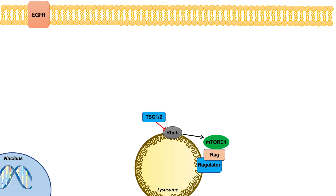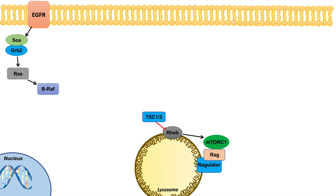How does this tie in with the RAS-RAF-MEK-ERK pathway? The RAS-RAF-MEK-ERK pathway is activated when a receptor in the cell membrane known as EGFR is activated by a number of different ligands. When this receptor is activated, it leads to activation of SOS and GRB2, which then activate RAS. When RAS becomes activated, it leads to activation of BRAF, then MEK1 and 2, then ERK1 and 2.